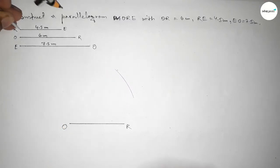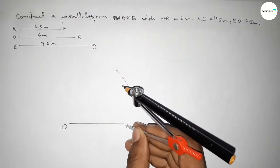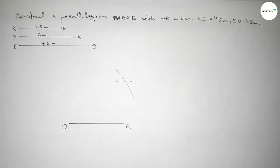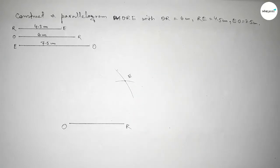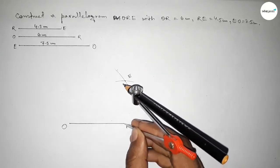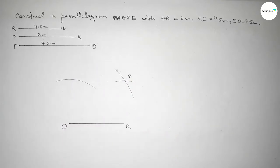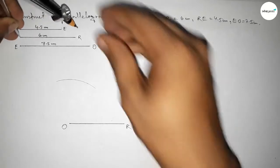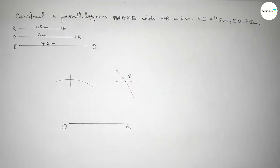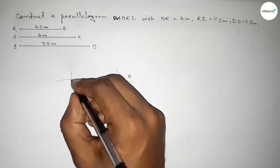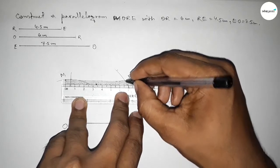Next, taking the length 4.5 centimeters by using compass and putting the compass on point E and cutting here, so both curves intersect at a point. Drawing an arc here. Now taking the length 6 centimeters by using compass and putting the compass on point E and cutting here, so both curves intersect at a point — taking here point M.